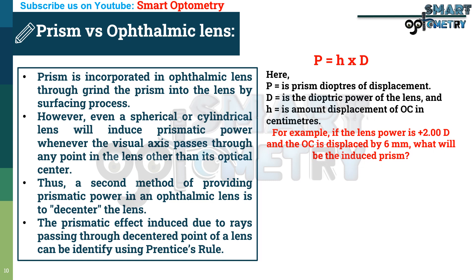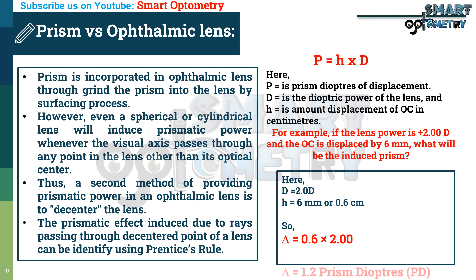For example, if the lens power is plus 2 diopter and the optical center is displaced by 6 mm, what will be induced prism? Here, D is equal to 2, H is equal to 6 mm or 0.6 cm. So, prismatic effect will be 0.6 multiplied by 2, or prismatic effect will be 1.2 prism diopters.